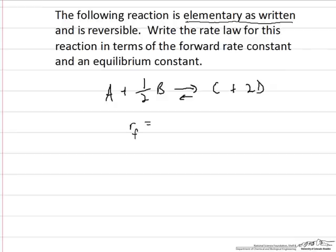If a reaction is elementary as written, we can write the rate of the forward reaction as equal to a rate constant k times the reactant species that contribute to the forward reaction raised to their stoichiometric coefficients. So we get a concentration of A to the first power, with an implied coefficient of 1, and a stoichiometric coefficient of one-half in front of B, so we raise the concentration of B to the half power. This is just for the rate of the forward reaction.